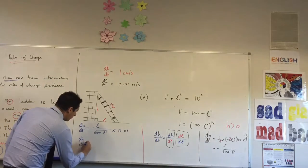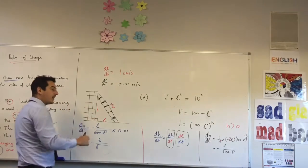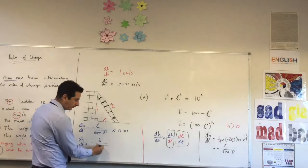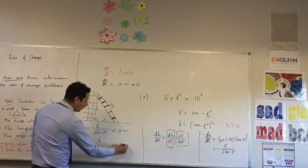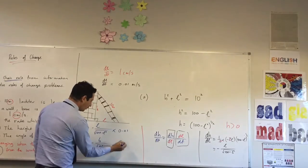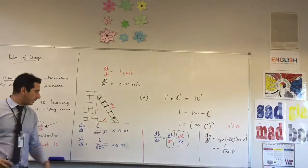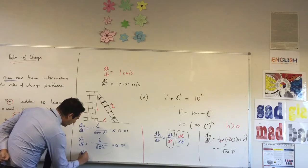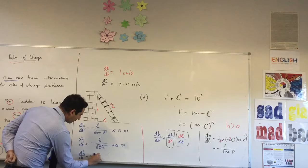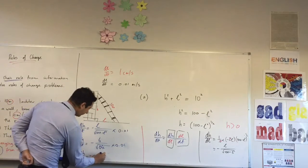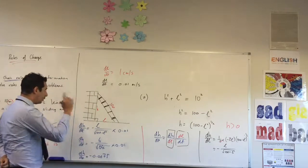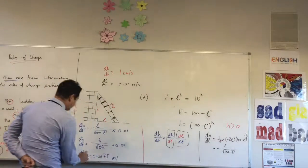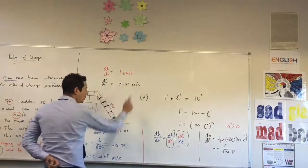So dH/dt equals minus six over square root of 100 minus 36, what's that? 64. Times 0.01. Square root of 64 is just 8, isn't it? So we can just get a number for this. It should equal negative 0.0075. And we've got units, what are our units? Meters per second. Because we already got seconds introduced here.